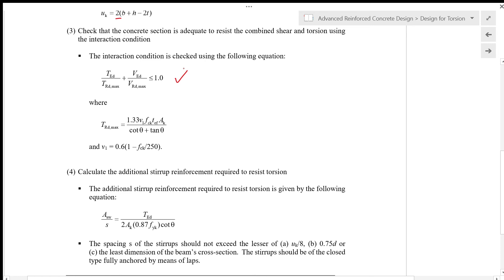Where TRD max = 1.33 ν1 fck tef AK/(cot θ + tan θ) and ν1 = 0.6(1 - fck/250).